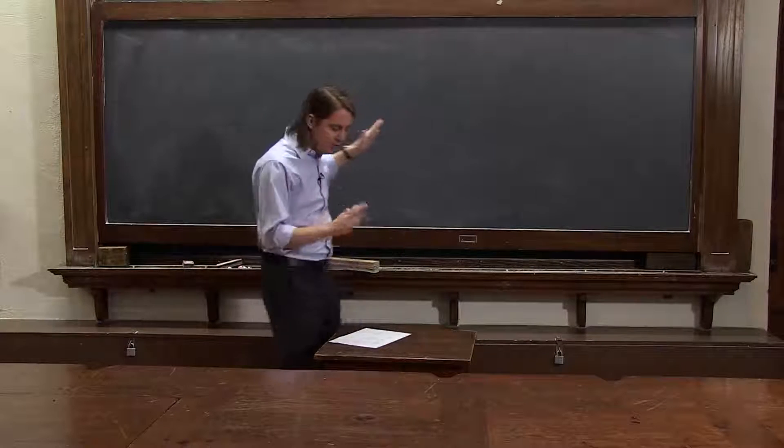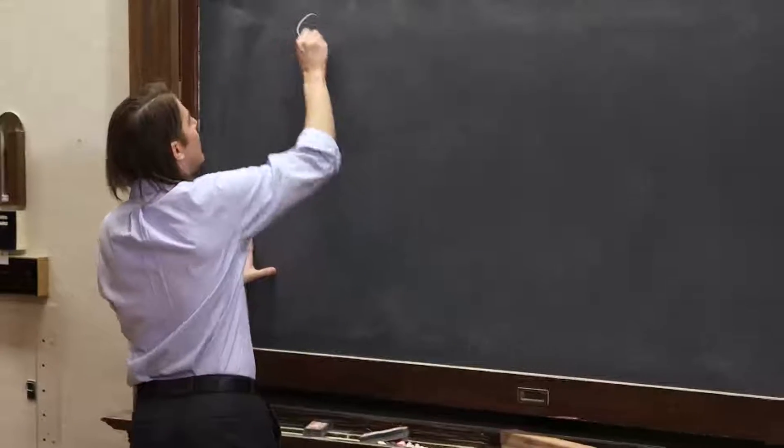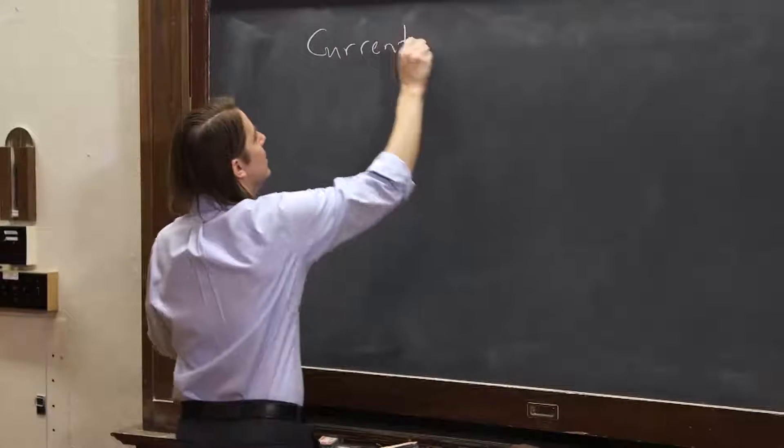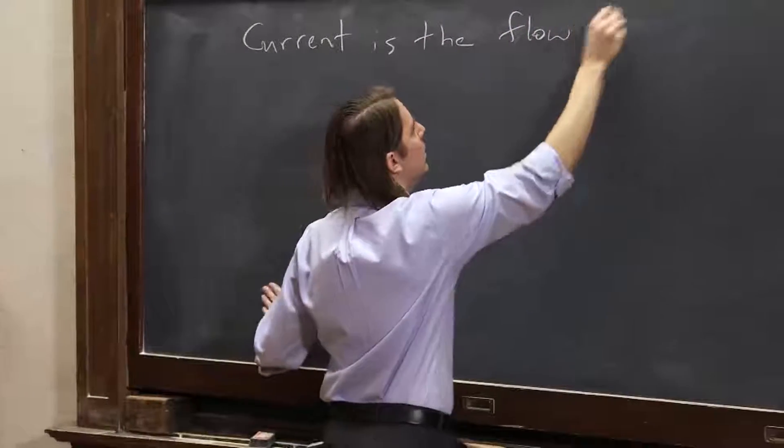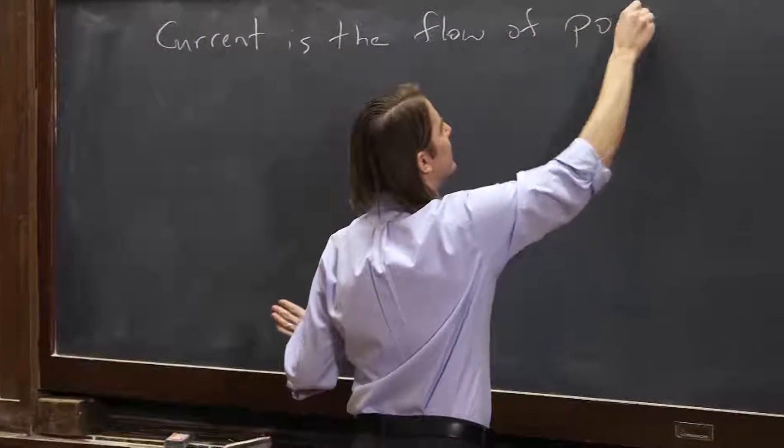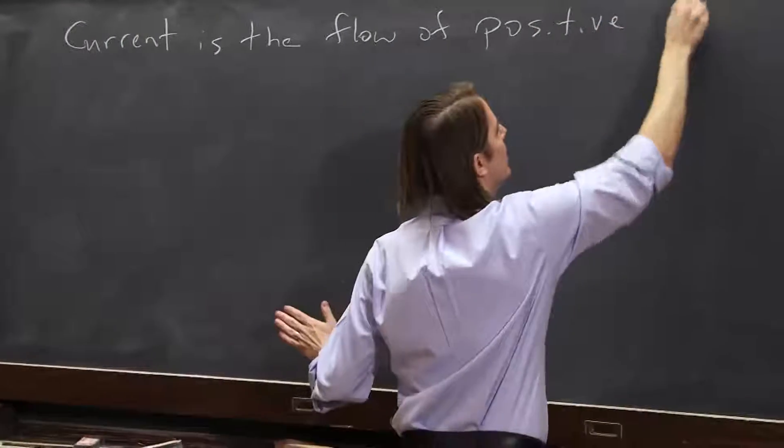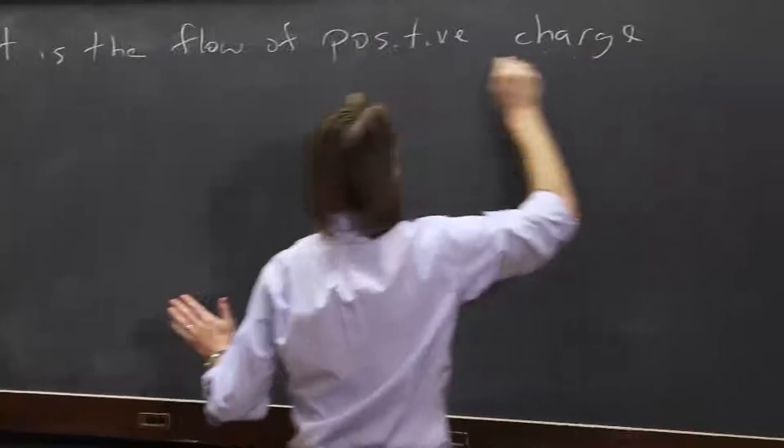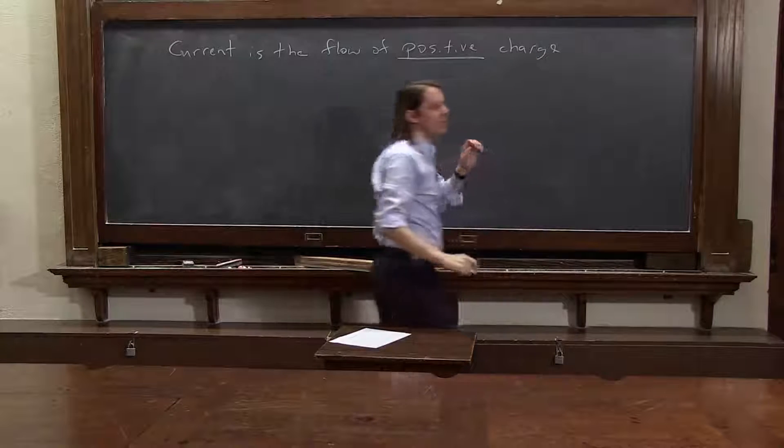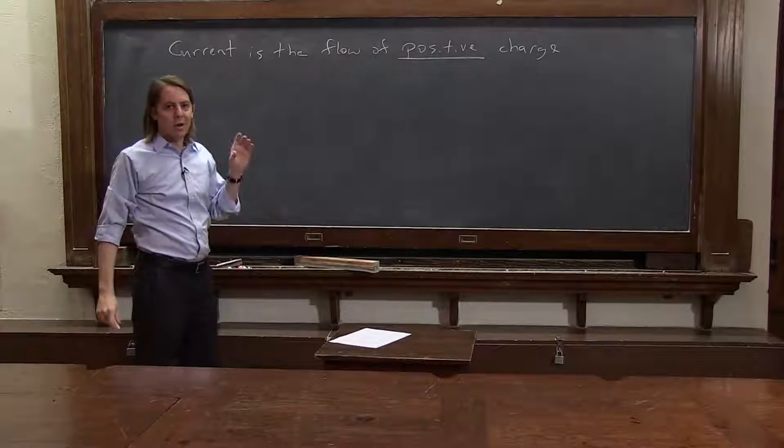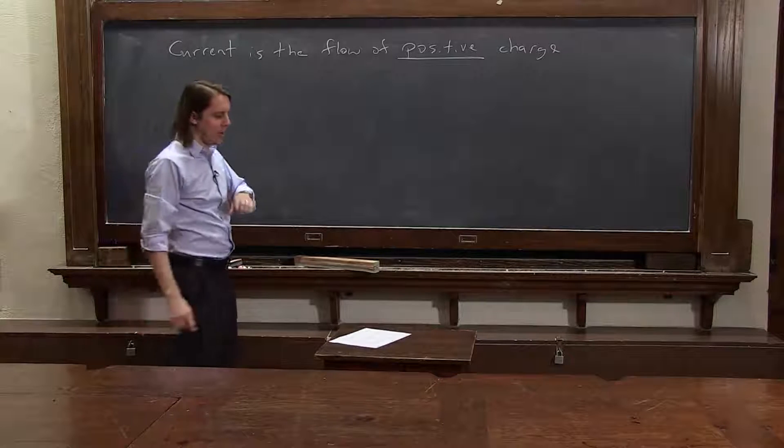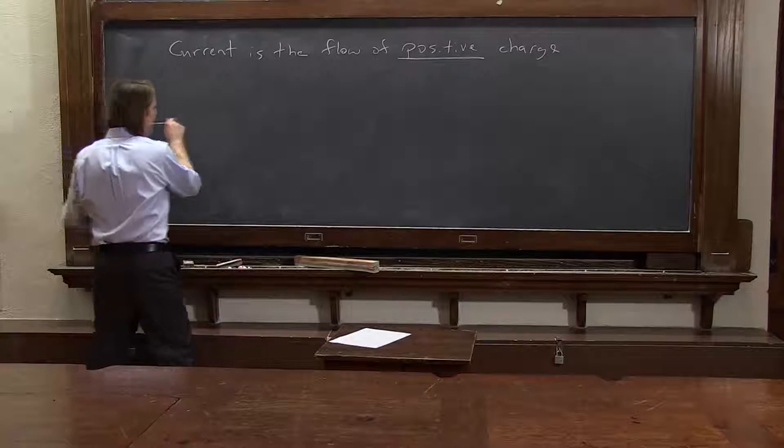Another example is in current. One thing you must remember is current is the flow of positive charge. And almost all the currents you will think about in the real world are going to be electron flow in a metal wire. So let's look in a metal wire and make this very clear.